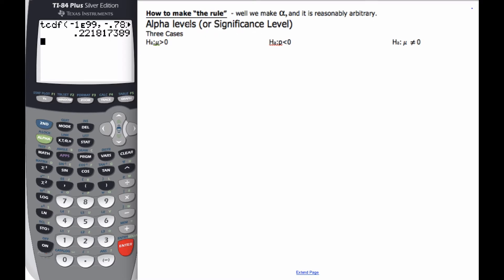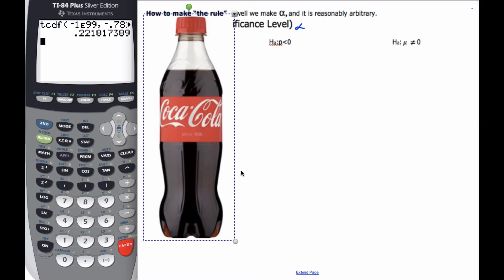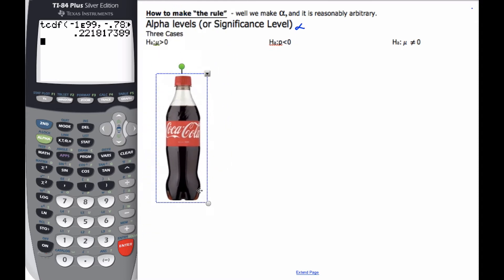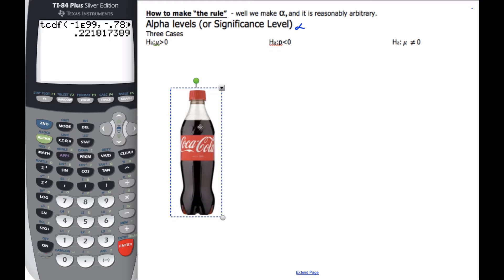So how do I make this rule? This alpha level or significance level, alpha, it's basically our rule where we decide that our result from our sample is unexpected now. For example, consider if we had a Coke can. I know that this Coke can gets filled up and it's supposed to be 500 milliliters, but machines are such that not every single one is going to be exactly 500.